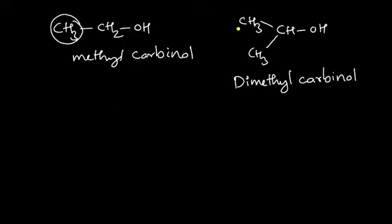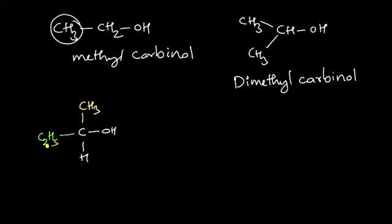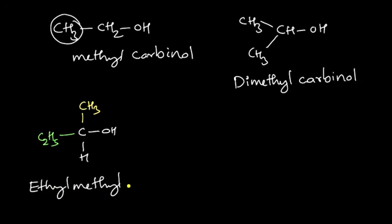Now if we attach two different alkyl groups to the carbinol carbon — one CH₃ group on one side and one C₂H₅ group on the other — we name the groups in alphabetical order: ethyl comes first, then methyl. So this compound is ethyl methyl carbinol.